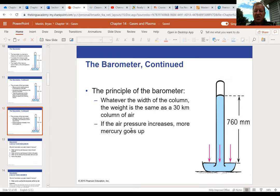So, it doesn't matter how wide this column is. It's going to be whatever the width of the column, the weight is the same as 30 kilometer column of air. The 30 kilometers, that's the thickness of the atmosphere. If the air pressure goes up, the mercury goes up.